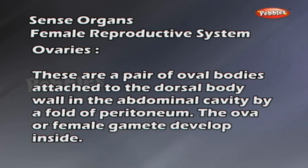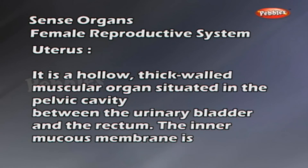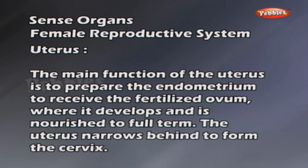Fallopian Tube: close to each ovary is a funnel-shaped structure called the fallopian tube. The fallopian funnel leads to a narrow tube called the fallopian tube. The two fallopian tubes open behind into the uterus. Uterus: it is a hollow, thick-walled, muscular organ situated in the pelvic cavity between the urinary bladder and the rectum. The inner mucous membrane is known as the endometrium. The main function of the uterus is to prepare the endometrium to receive the fertilized ovum, where it develops and is nourished to full term. The uterus narrows behind to form the cervix.